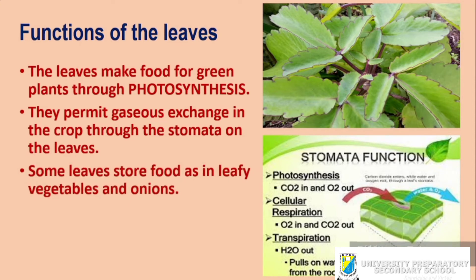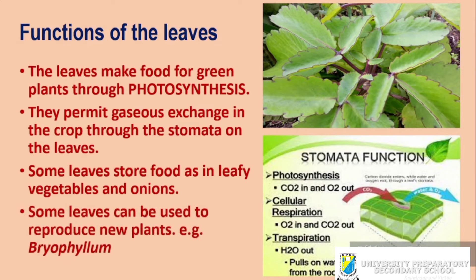Some leaves store food as leafy vegetables — examples include amaranthus, water leaf, and onions as a way of storing food in the leaves. Some leaves are also used to reproduce new plants — an example is bryophyllum, which uses the leaf to propagate or reproduce new ones. The leaves also help in transpiration, which is the removal of water from the leaves.